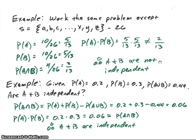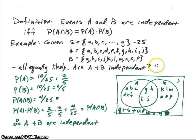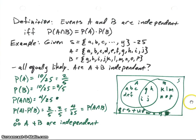I should also point out that sometimes people confuse independence with mutually exclusive. These two sets are not mutually exclusive in this particular problem — in other words, they have some common elements between them. However, they were independent. So those two statements, independent and mutually exclusive, are not the same thing, and sometimes it's confusing to think they might be, but they're not.